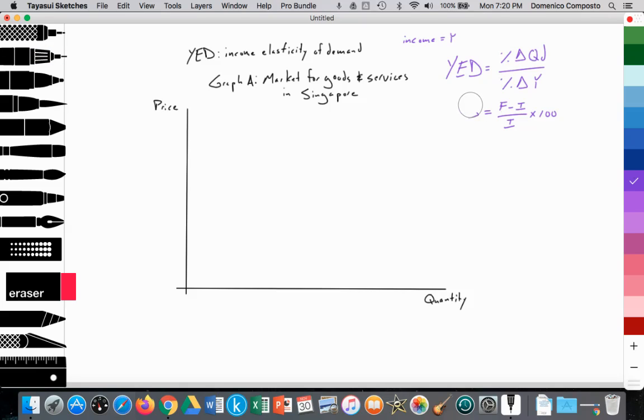So what are the values that we get with YED, and what does it indicate? Well, there's three outcomes with YED. One is YED being less than zero.